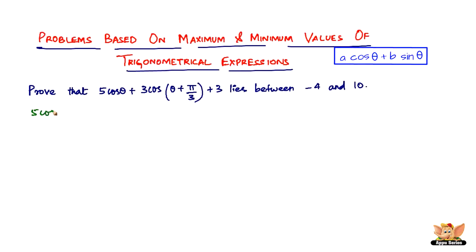So we have 5 cos θ and 3 cos(θ + π/3), which is the form a plus b. So cos(a + b) is cos a cos b minus sin a sin b, plus 3.